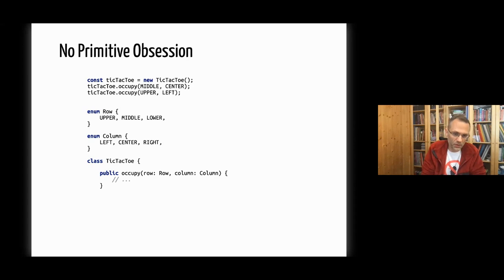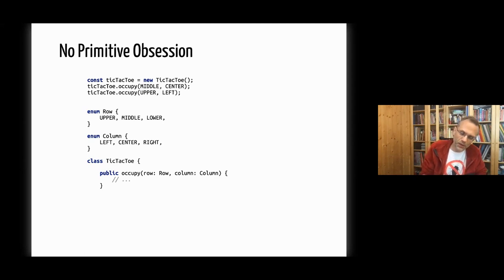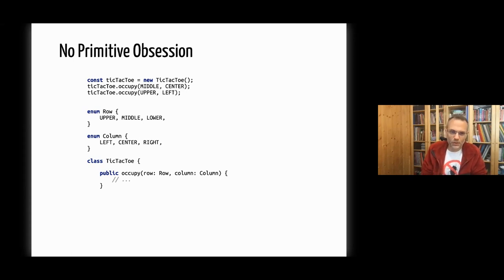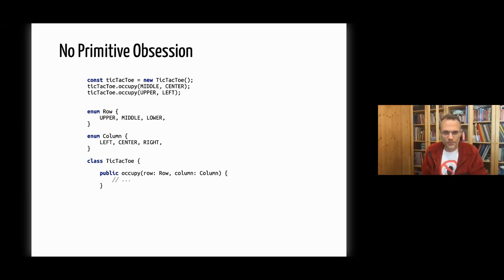The solution: introduce enums. Using one enum for the row and another for the column means we cannot mistake row for column and vice versa. There's no error possible. At the entry point we'll have a string we need to translate into an int, then into a Row, with validation — but once we have that, all the rest of the code benefits from this higher qualification.